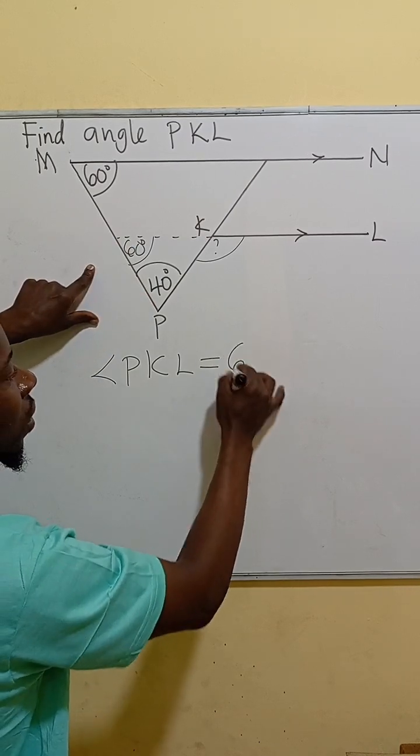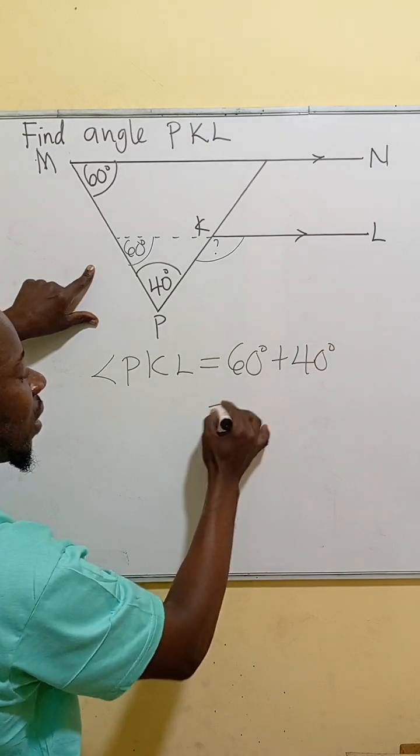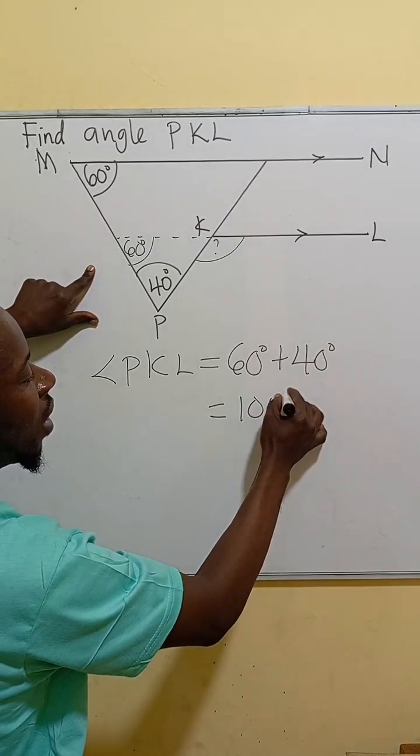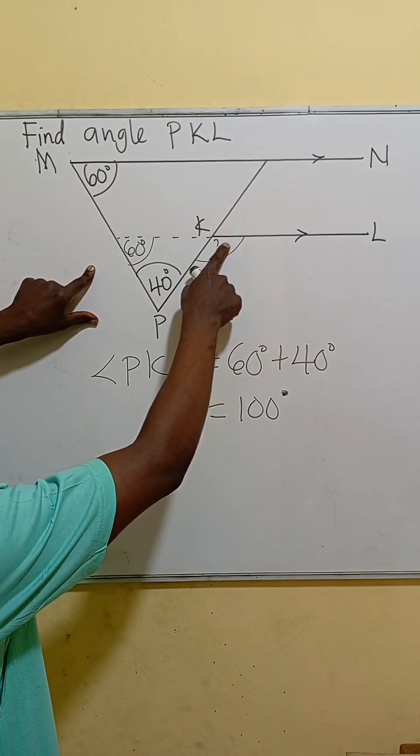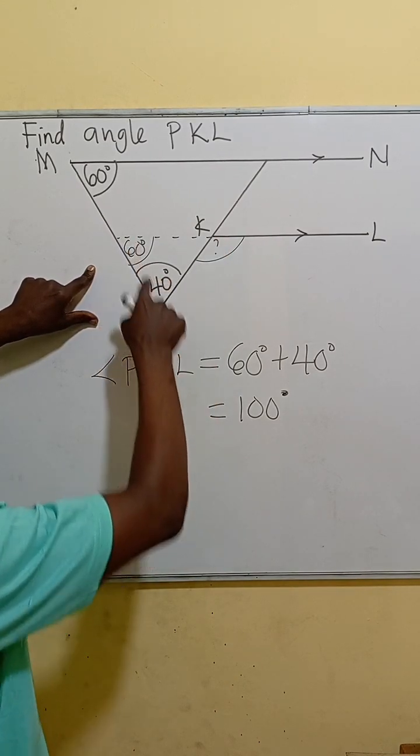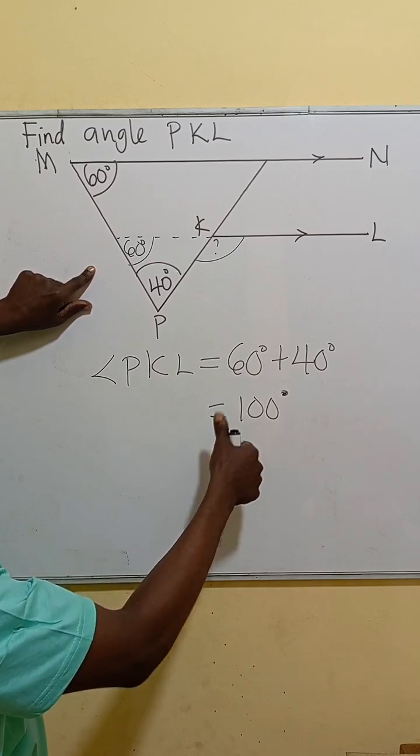opposite interior angles: 60 degrees plus 40 degrees, which gives us 100 degrees. The exterior angle equals the sum of the two opposite interior angles. Thank you for watching.